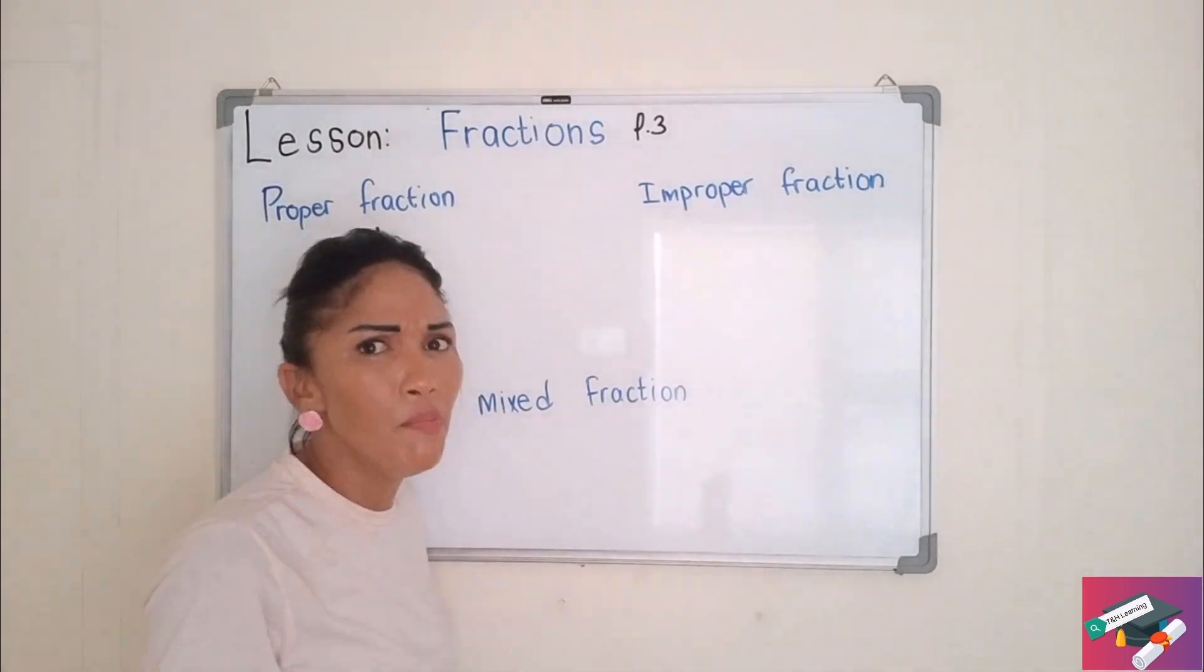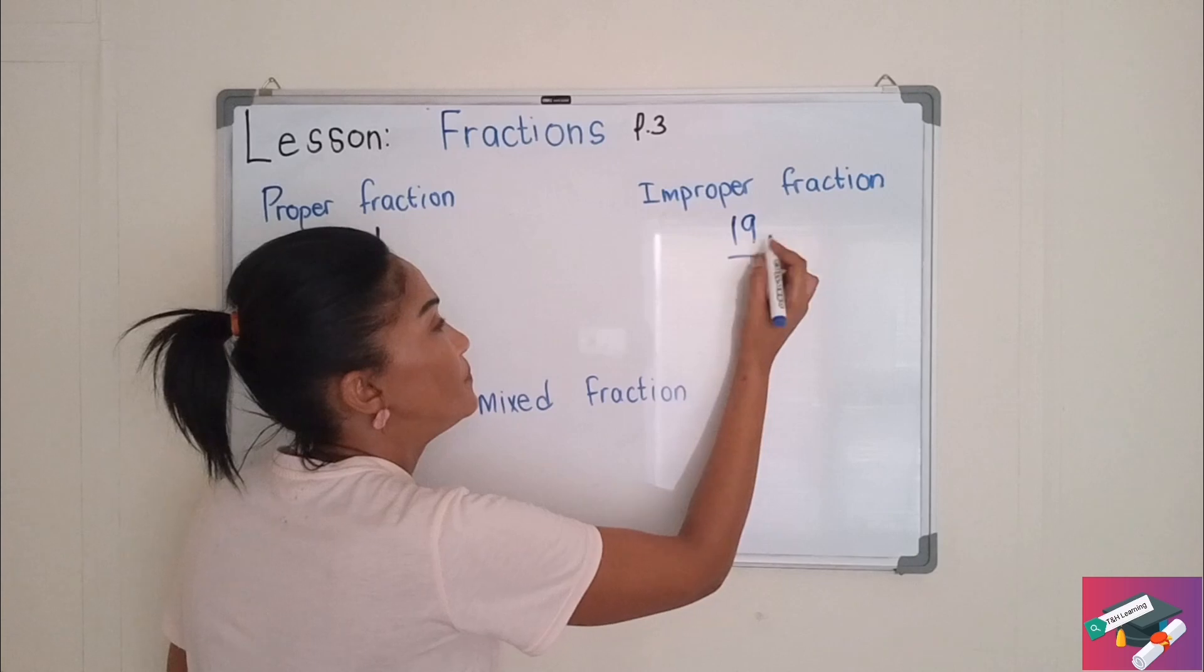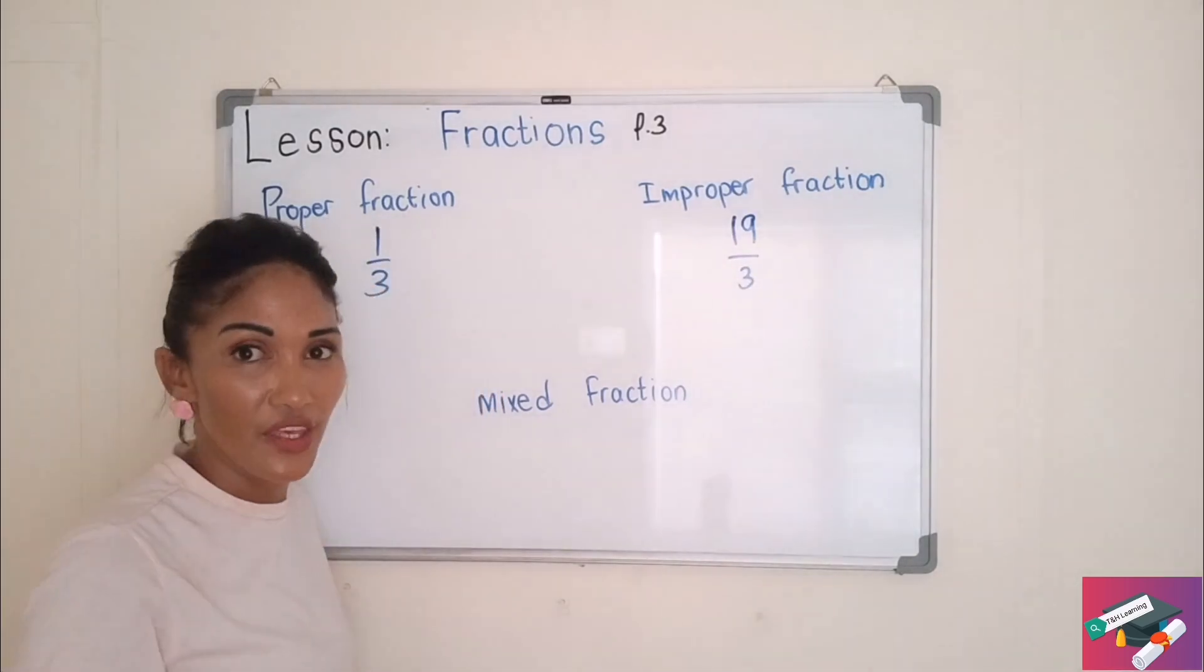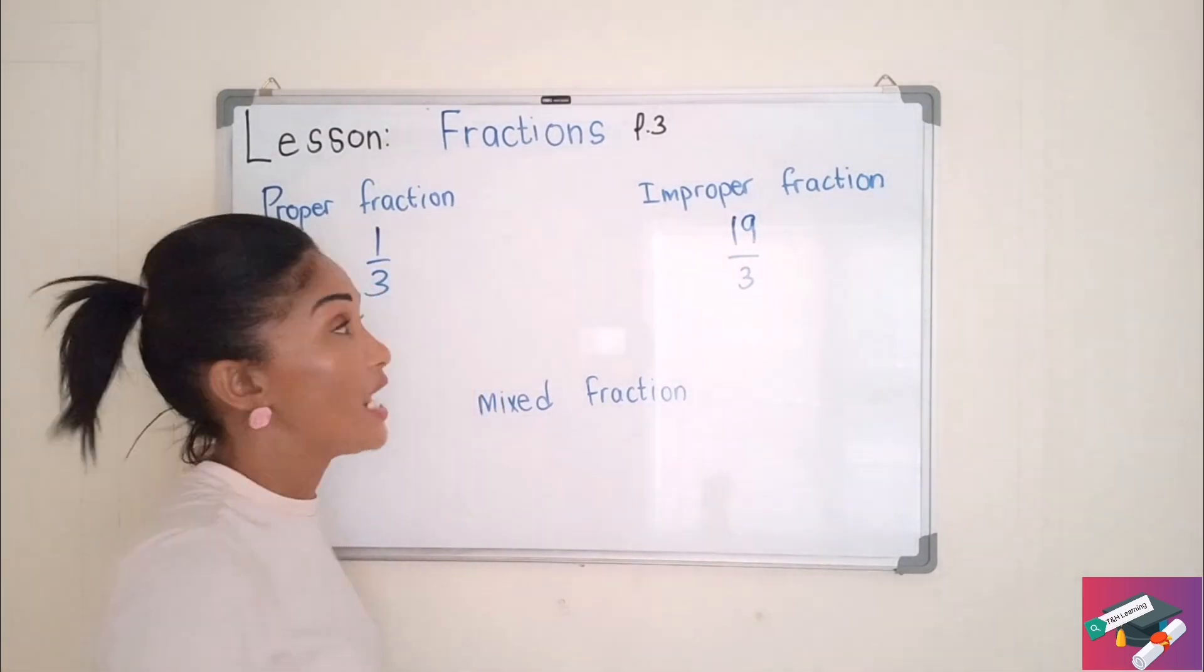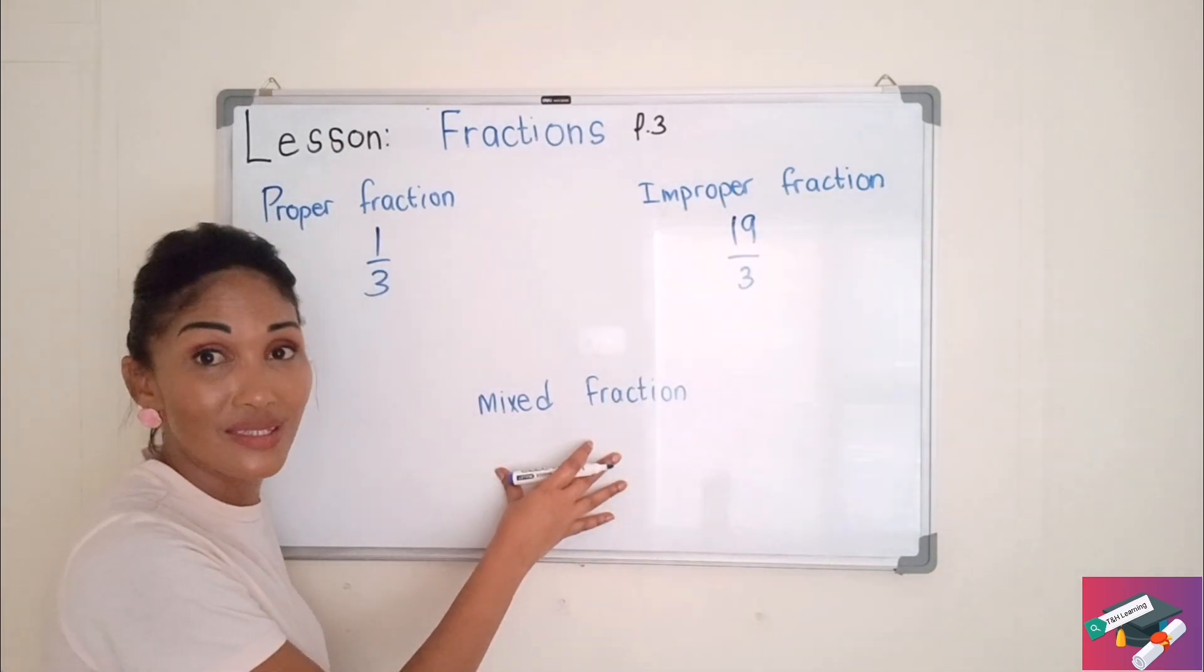What is an improper fraction? An improper fraction is when my numerator is bigger than my denominator. Now in this way, we will get what we call a mixed fraction.